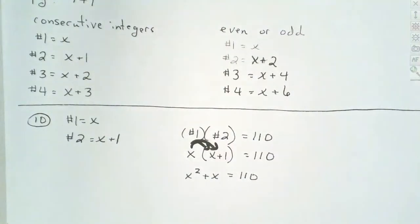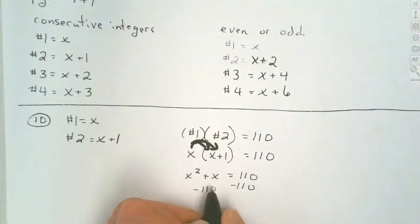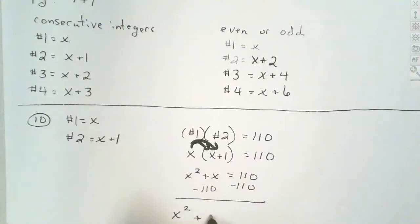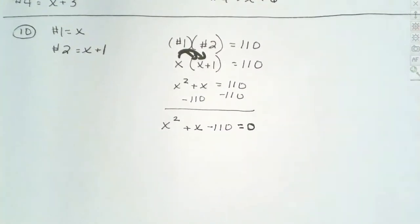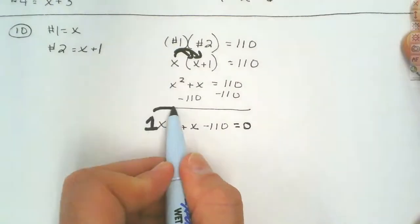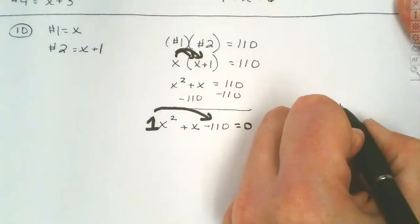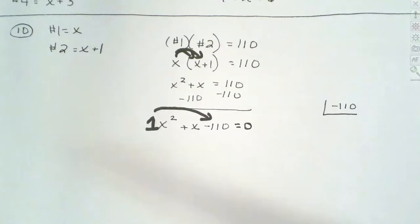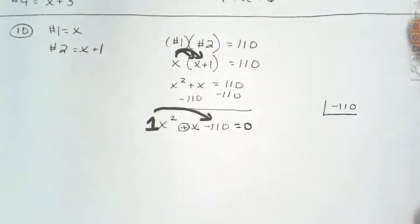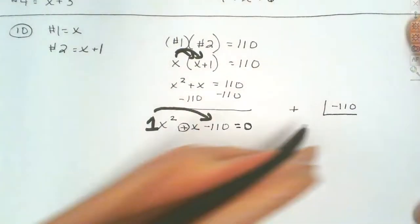We're going to either use zero factor or the quadratic formula to solve this, so either way we set this equal to zero. I always like to start with zero factor — if I can't solve it with zero factor, I'll move on to the quadratic formula. No number in front, so we put 1 here, and 1 times negative 110 is negative 110. Since it's negative, we know the signs are different — the larger number is positive and the smaller number is negative.